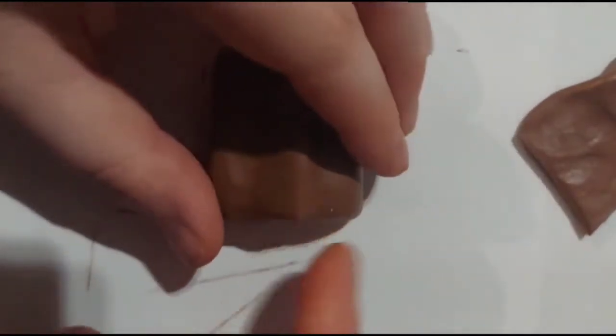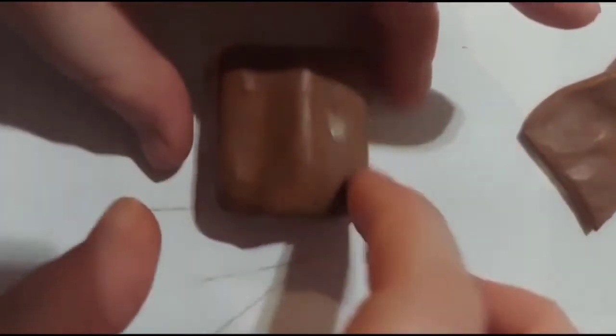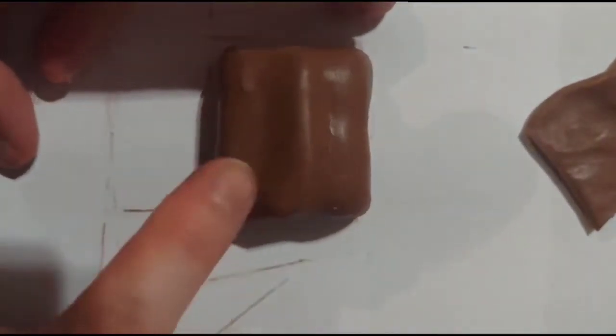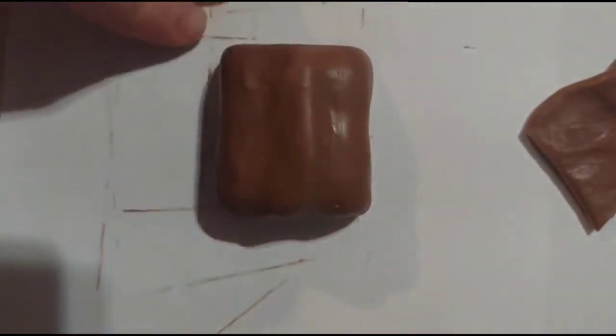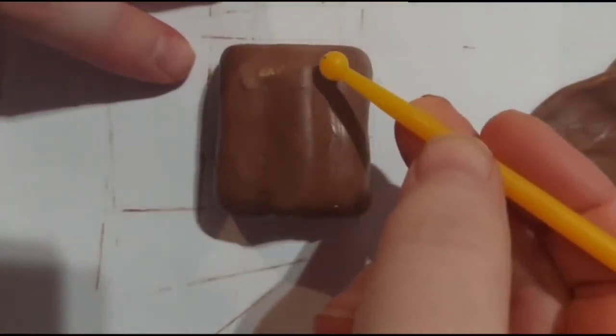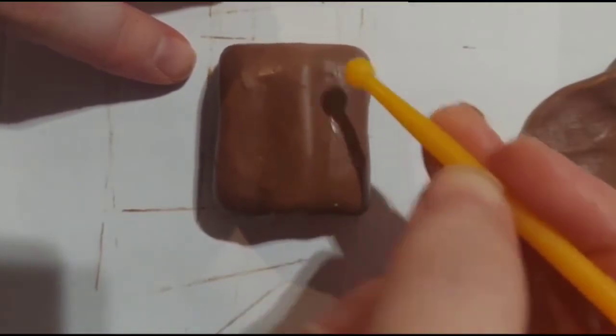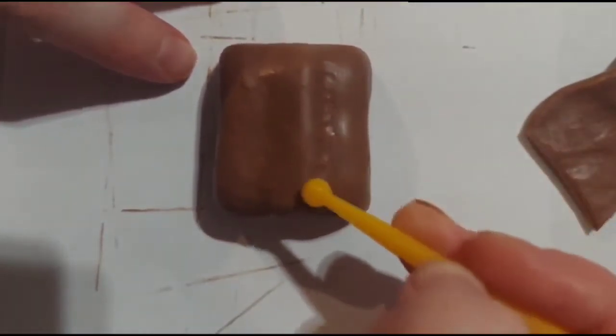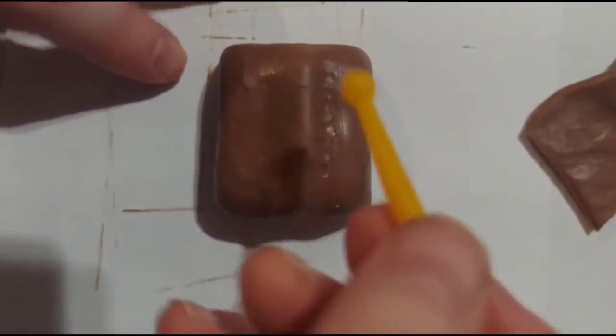Continue smoothing out the edges and then the sides. You're going to go all the way around and smooth the grooves on the sides. Then you're going to use your dotting tool and make little indents all the way down. And then you're going to do it on the other side as well.